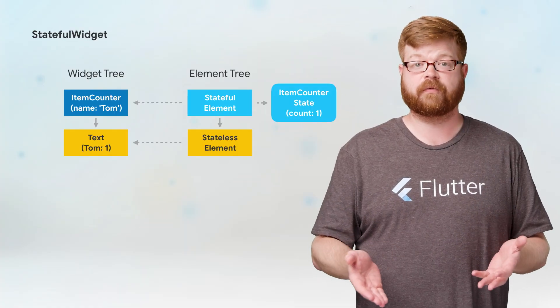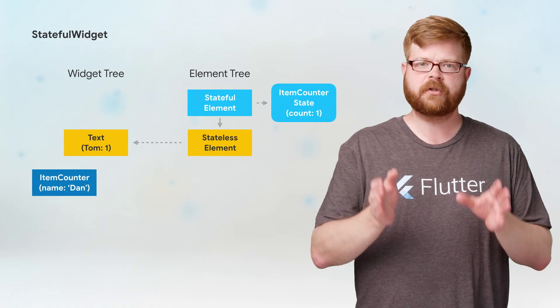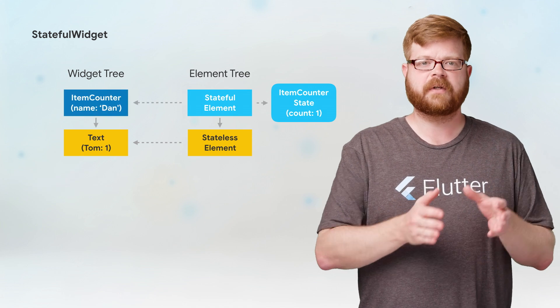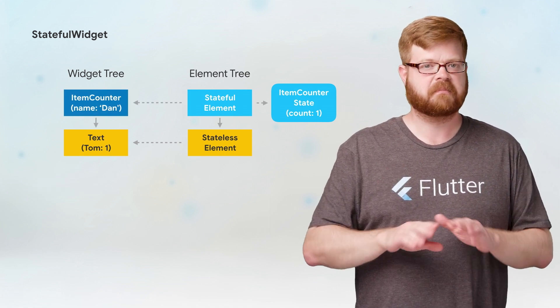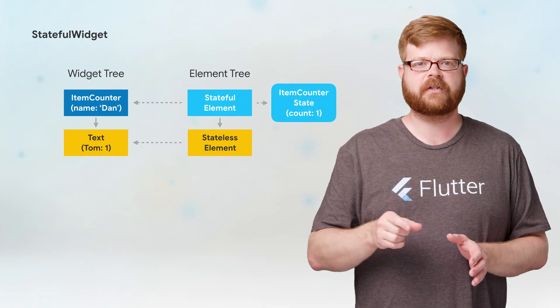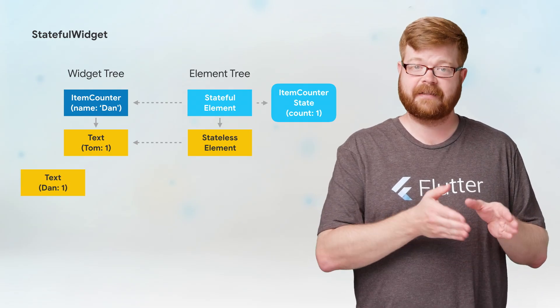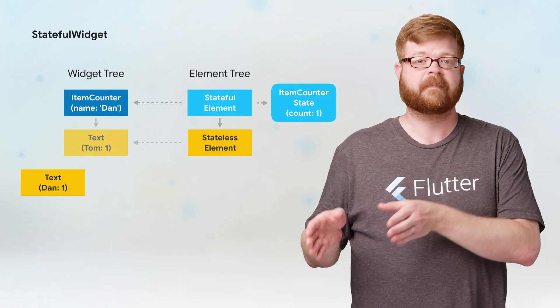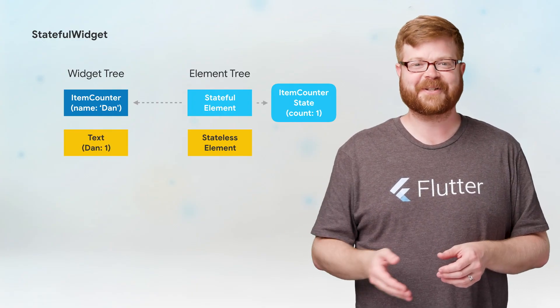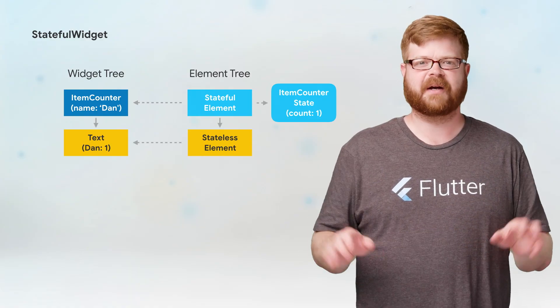So that's a basic example of how state objects can hold data that changes over time and rebuild child widgets when it does. But there's another really useful thing about state objects: they have a long lifespan. They can remain attached to the element tree even when the original widget gets replaced by a new one, as long as that new one is of the same type. For example, if the item counter widget itself were rebuilt, maybe from a change above it in the tree, the original item counter widget goes away. But since the new one is the same type of widget, the stateful element and state object stay right where they are. They survive the change in widgets and just mark themselves dirty so their children get rebuilt. Then the state object's build method kicks out a new text widget using its count value, but with the new item counter widget's name value. The old text widget goes away, the new one's mounted, and the stateless element for the text stays right where it is.